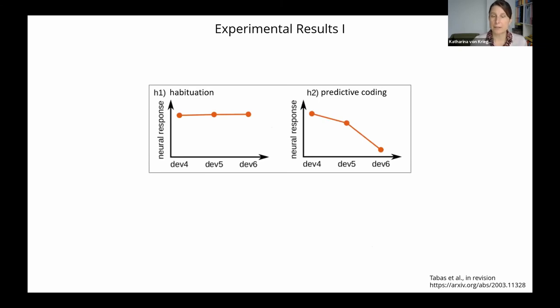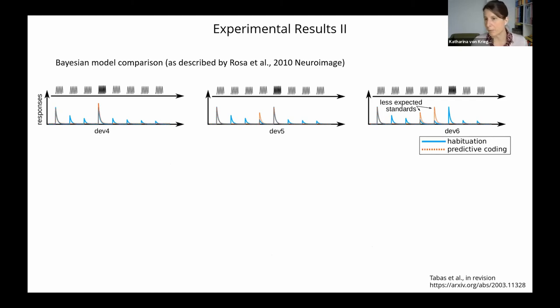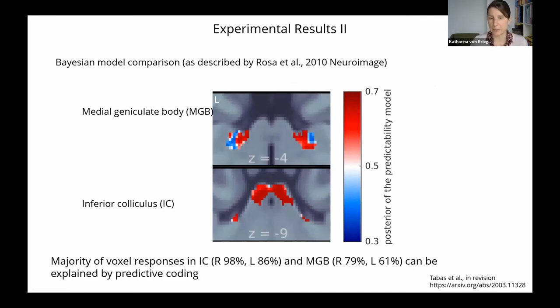So these results already indicate that the habituation view is not correct to explain these results. To more formally test this, we performed a Bayesian model comparison of these responses, and we defined two models, one the habituation model and one the predictive coding model, which make different predictions, as I already said, to how much they respond to the different deviant positions, as well to less expected standards. And these are the results. This is the medial geniculate body, and this is the inferior colliculus. And the more red it is, the higher is the posterior for the prediction model. And as you can see here, that there are large parts of the medial geniculate body, and even more of the inferior colliculus, that can be explained by the predictive coding model.